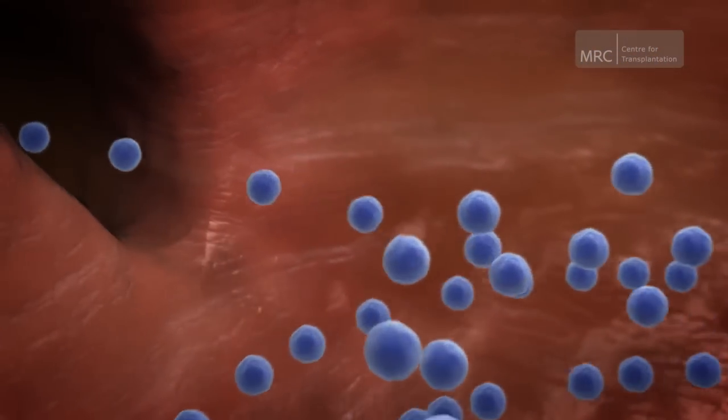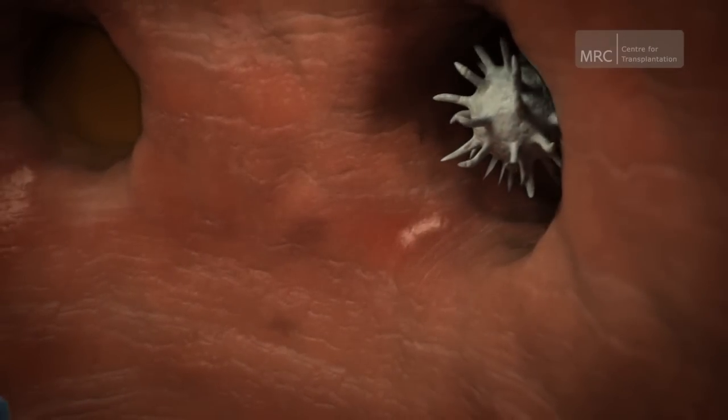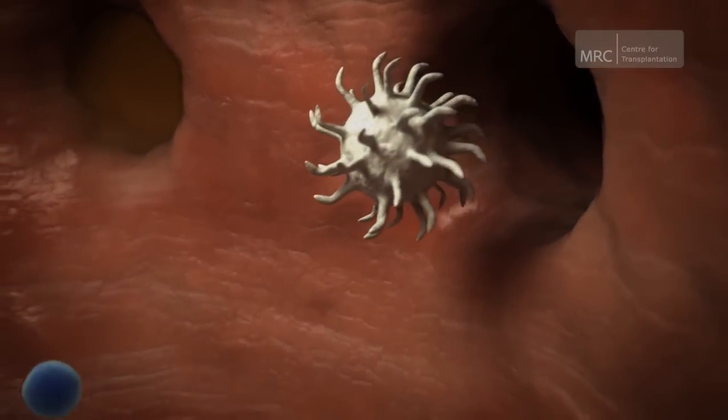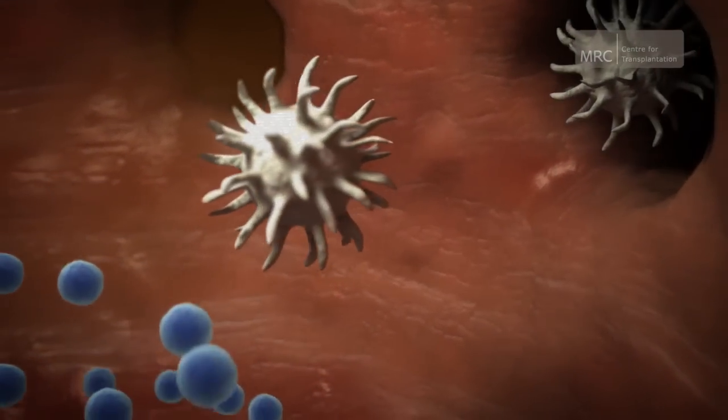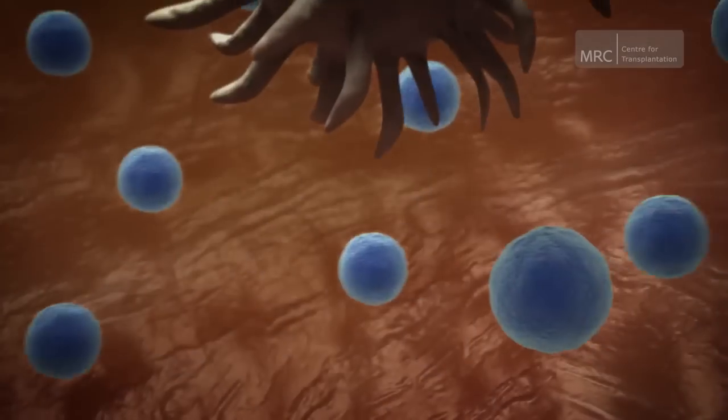Control how the immune system will react to intruders. Dendritic cells coming from the transplanted kidney enter the lymph node and begin to mix with the T cells. As they come into contact with the T cells...